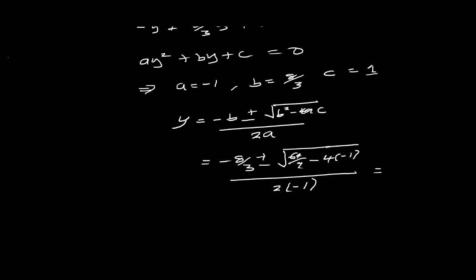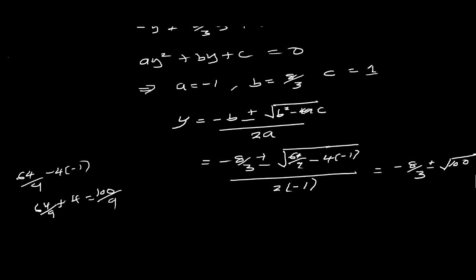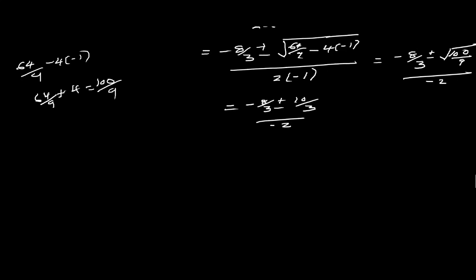Simplifying: we have negative eight over three plus or minus the square root of 64 over nine minus four times negative one, which is plus four. So 64 over nine plus four equals 100 over nine. The square root of 100 over nine is 10 over three. Everything is over two times negative one, which is negative two.